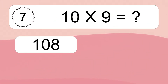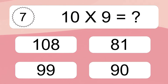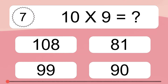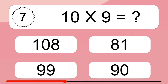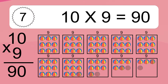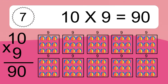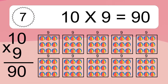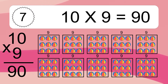Ten times nine equals what? Ten times nine equals ninety. We have ten boxes and each box has nine colorful balls inside. If you count all the balls in all the boxes together, you will have ten times nine balls. This equals ninety balls.